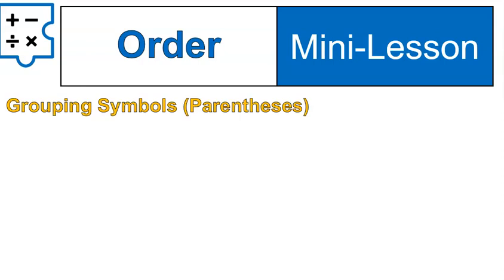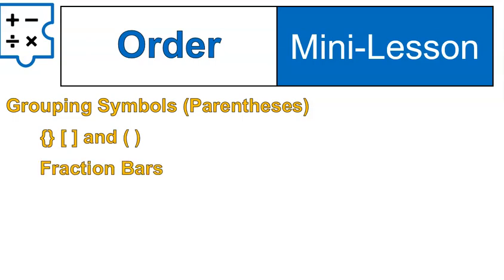The first thing that gets done is grouping symbols. Sometimes we call this parentheses, but it includes a little bit more — it includes braces, brackets, parentheses, and fraction bars, which we'll talk about later. All of that gets put into one category of grouping symbols. If we put something inside a grouping symbol, it gets simplified first.